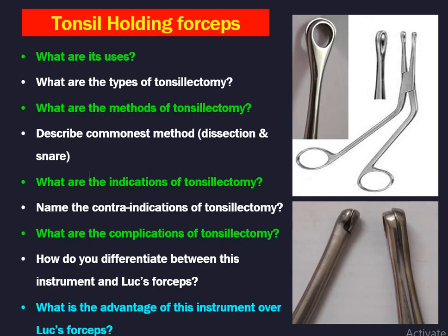This is the normal position. Next is tonsil holding forceps — the second most important instrument asked in ENT practicals. Its use is to hold the tonsils during tonsillar surgery. You might be asked about types of tonsillectomy, methods of tonsillectomy, the commonest method which is dissection and snare, indications, contraindications, and complications. How do you differentiate this instrument from Luc's forceps, and what is the advantage of this instrument over Luc's forceps?